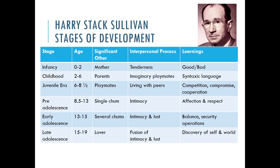Sullivan had stages of development, much like Erikson did. He has an infancy period, childhood from two to six years of age, a juvenile era from six to eight and a half — which is an unusual age bracket — a pre-adolescent period from about eight and a half to thirteen, and then he separates early adolescence from late adolescence, which makes him different from other theorists who have stages of development.